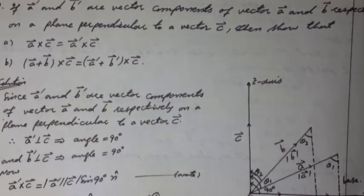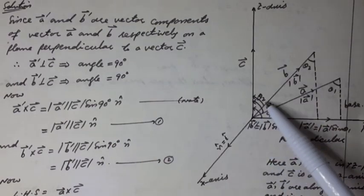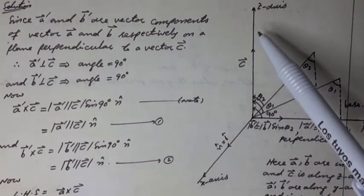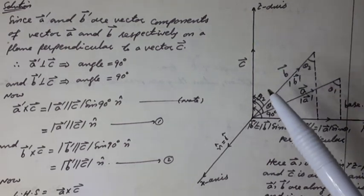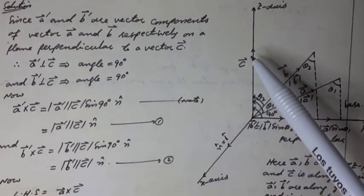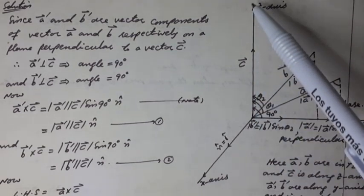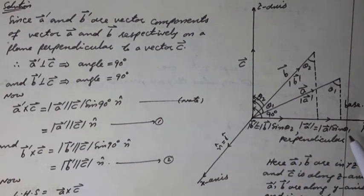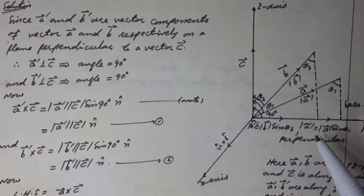Solution: here a vector and b vector are in the YZ plane and vector c is along the Z axis. A-dash vector and b-dash vector are along the Y axis, where the Y axis is common for the YZ plane and XY plane. Note it.